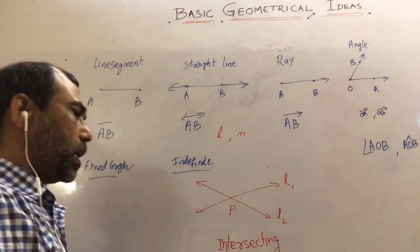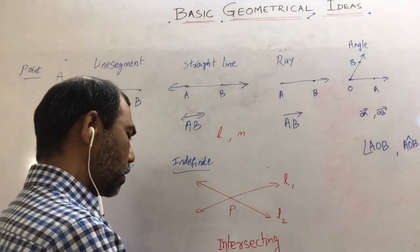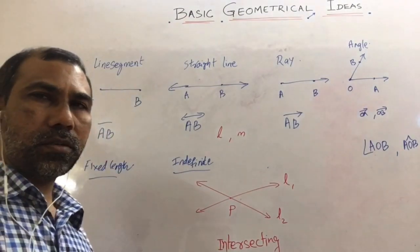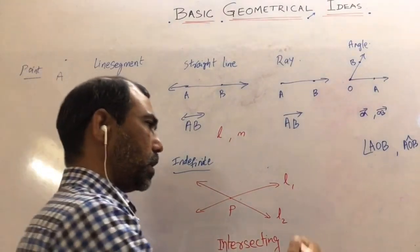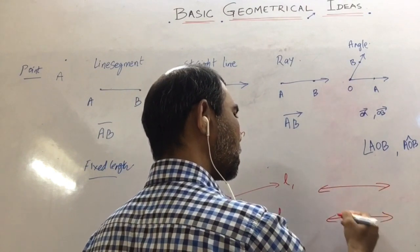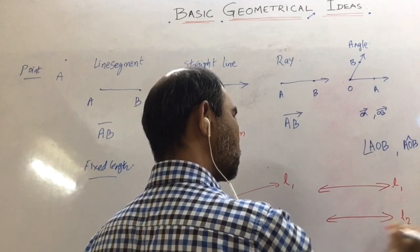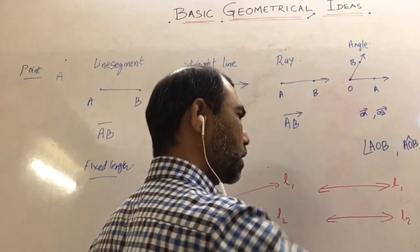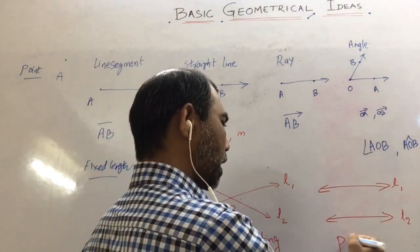We have another type of lines like parallel lines which do not intersect anywhere. They extend indefinitely in all directions. Let us see here, say this is L1 and this is L2. L1 and L2 they are not meeting. Even though if you extend indefinitely they will not meet. This kind of lines are called parallel lines.